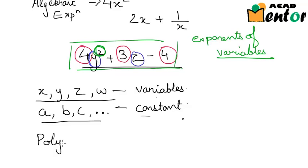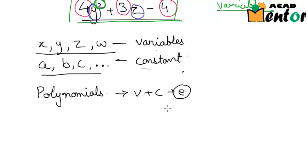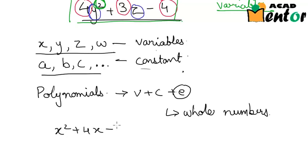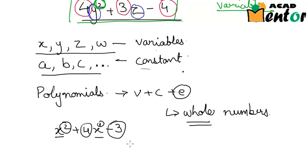Polynomials are just a special case of algebraic expressions — again a combination of variables, constants, and exponents of variables — but with the special condition that these exponents must always be whole numbers. For example, x² + 4x - 3 is a polynomial in x. Here the exponents are 2 and 1, both whole numbers, so this expression classifies as a polynomial.